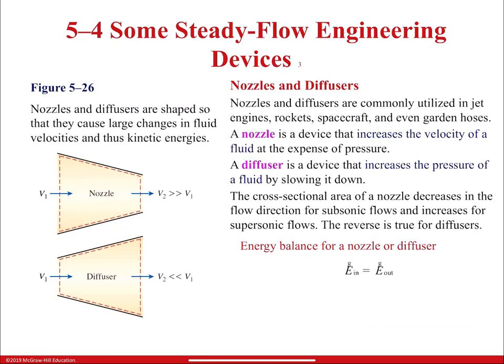We're going to define different engineering devices used in thermodynamics, noting for each whether heat is close to zero, work is close to zero, delta PE, delta KE, and so on. Nozzles and diffusers are shaped to cause large changes in fluid velocities and therefore kinetic energy. They're commonly used in jet engines, rockets, spacecraft, and even garden hoses. A nozzle increases the velocity of a fluid at the expense of pressure; a diffuser increases the pressure of a fluid by slowing it down.